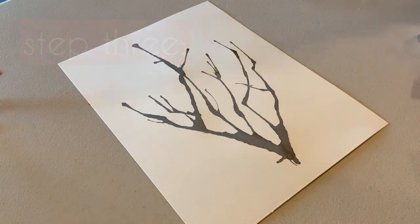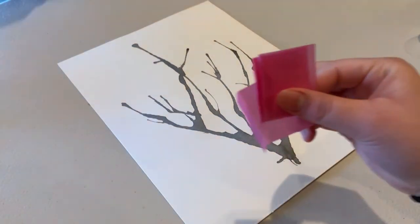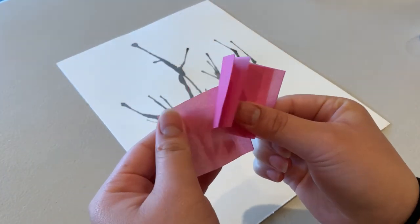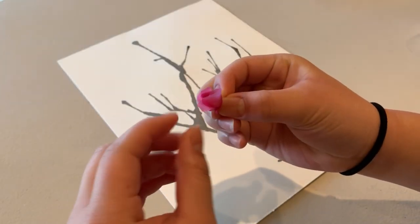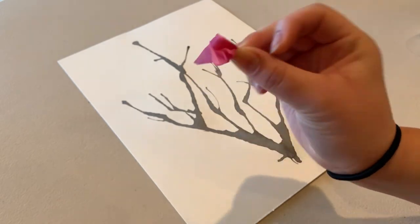As you wait, you can start to make your cherry blossoms. Take your tissue paper and cut it into squares that are about 2 by 2 inches. They do not need to be perfect. Lightly crumple your sheets of tissue paper so they look like flowers.